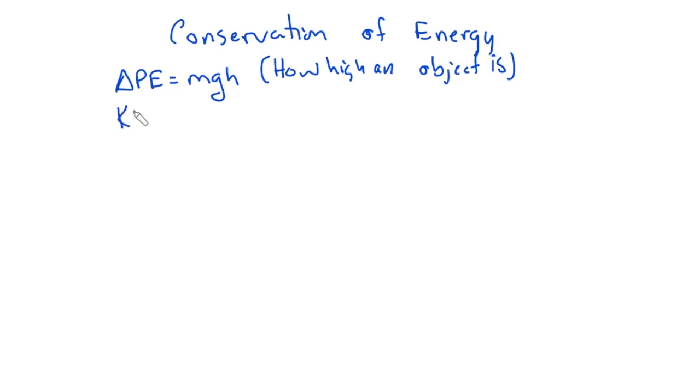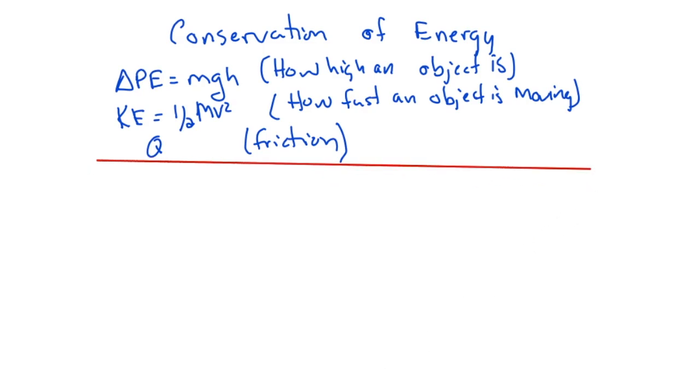Now the most difficult type of problems is going to be ones that use the conservation of energy. Let's look back at the energies we've seen so far. So far we've seen delta PE, which is equal to mgh, and this is how high an object is. Then we moved on and we saw KE, which is pretty familiar, one half mv squared, and this is how fast an object's moving. Then we saw Q and this was friction. But now we are going to add something else that we can say can be part of our transferred energy. And now we have delta PEs equals one half Kx squared, and this is going to be if there's a spring.